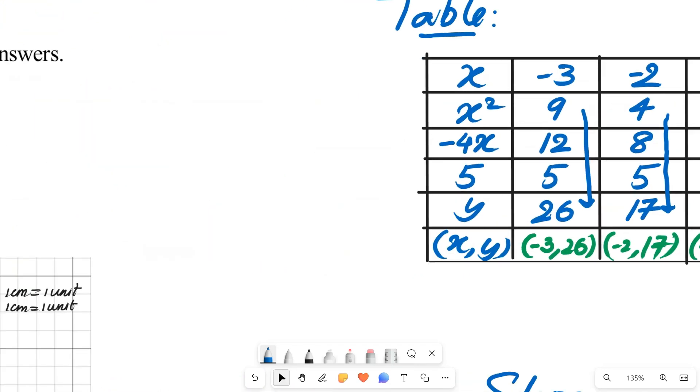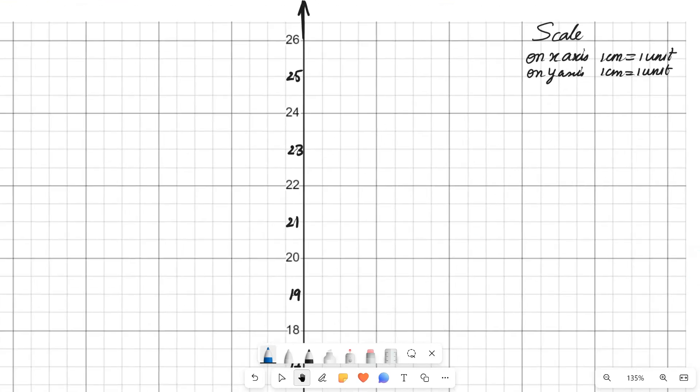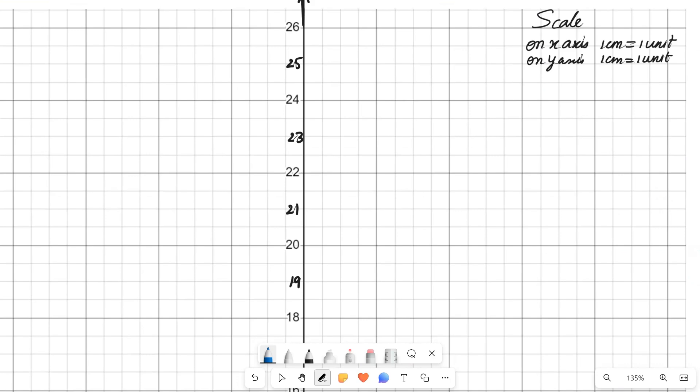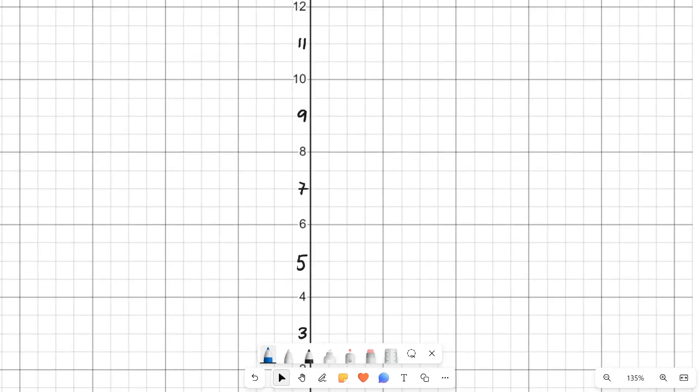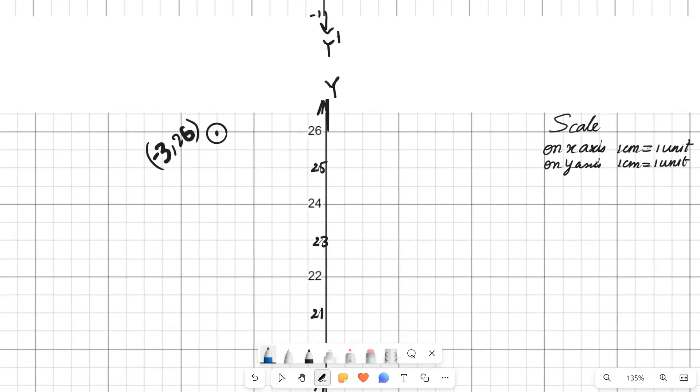Step 1: we need to take the graph page, draw x and y axis and take scale on x and y axis as 1 centimeter = 1 unit. After taking the scale we need to locate all the points on the graph sheet. For example we took (-3, 26),